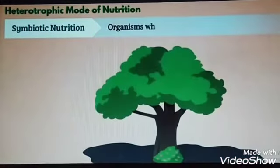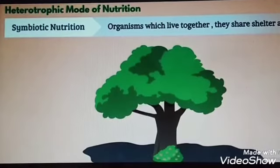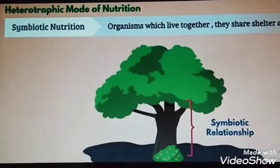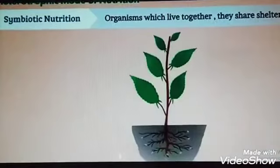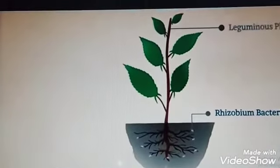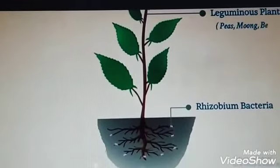Symbiotic Nutrition: There are some organisms which live together. They share shelter and food. This is called a Symbiotic relationship in science. For example, Rhizobium bacteria and leguminous plants such as peas, moong, beans, etc.